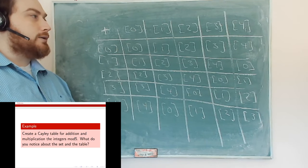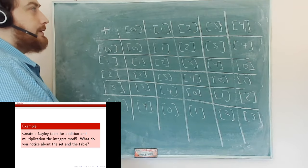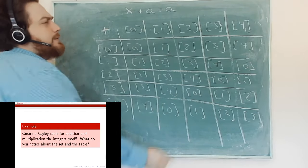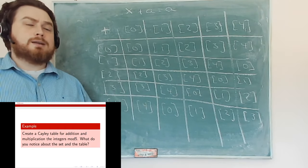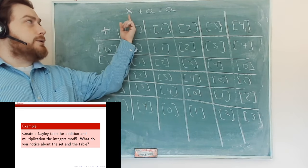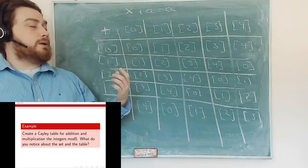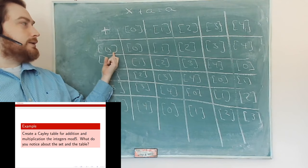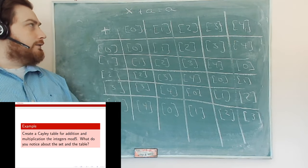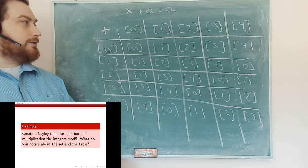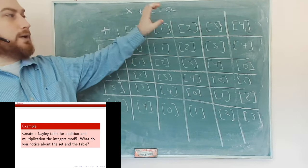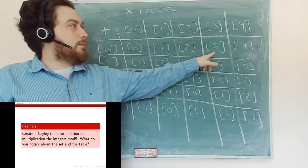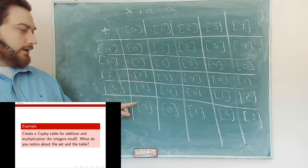An identity element x satisfies x+a = a for all a. For the integers or reals, the additive identity is 0, because 0 plus anything is just that thing. Looking at the table, the equivalence class of 0 is also an identity here: adding the 0-class to any other class gives back that same class. We can see it from the table — the 0 row and 0 column just reproduce whatever they're added to.